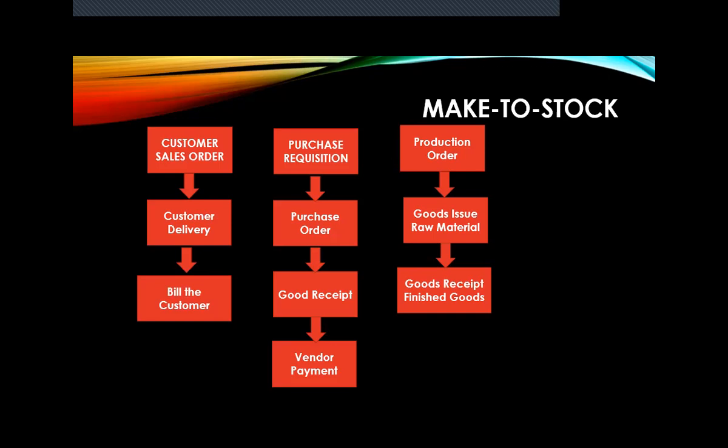In Make-to-Stock, sales, purchase, and production all happen parallelly. Order confirmation, customer delivery, customer billing, purchasing, and production are all happening simultaneously in the production line — there is no interlinking between the three. Every day production keeps running, purchasing keeps running, and sales keeps running. That is Make-to-Stock.